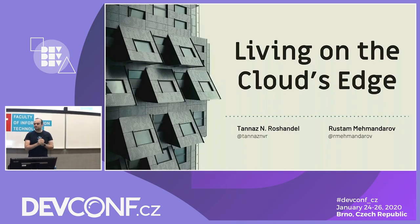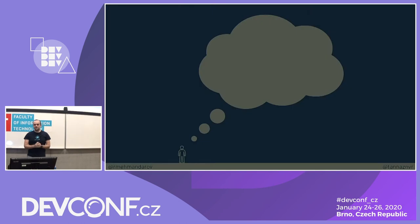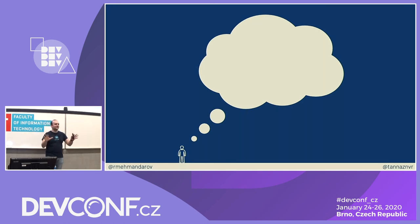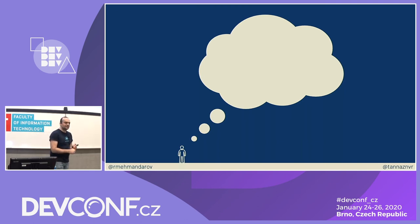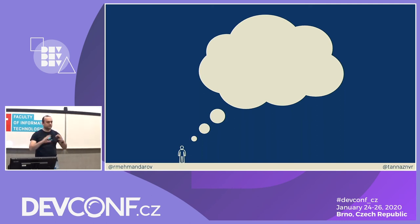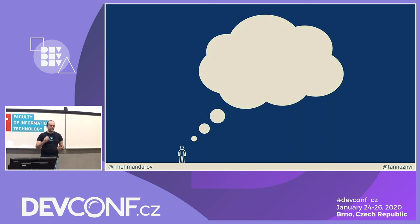Welcome to our session. I want to start the whole presentation with a thought exercise — a little task to keep thinking about for a while. Imagine you have to build a system that will count the number of people going in and out of a room. You can use whatever hardware or software you want, but the system must comply with four simple rules.